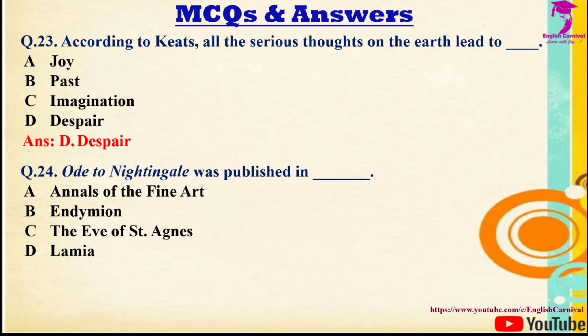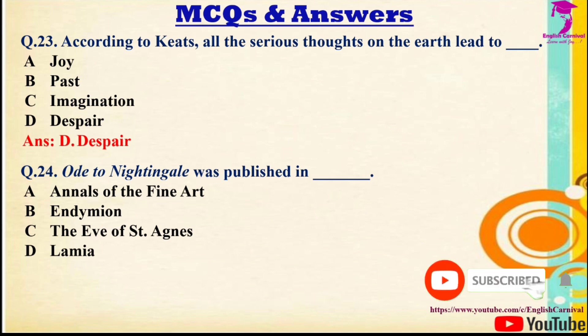Question 24: Ode to a Nightingale was published in — Options: A) Annals of the Fine Arts, B) Endymion, C) The Eve of St. Agnes, D) Lamia. The correct answer is A — Annals of the Fine Arts.